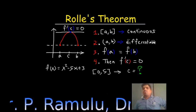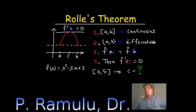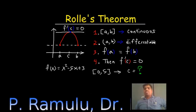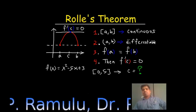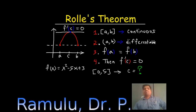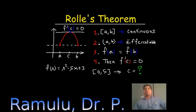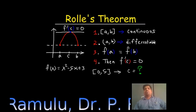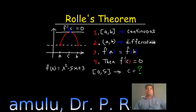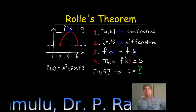Since f(0) equals f(5) equals 3, it satisfies all the properties of Rolle's Theorem. So there exists a point C between 0 and 5 such that f'(C) equals 0. Now f'(x) equals 2x minus 5. Setting f'(C) equal to 0 gives 2C minus 5 equals 0, so C equals 5 by 2. Thus C equals 5/2 lies between 0 and 5, verifying Rolle's Theorem.